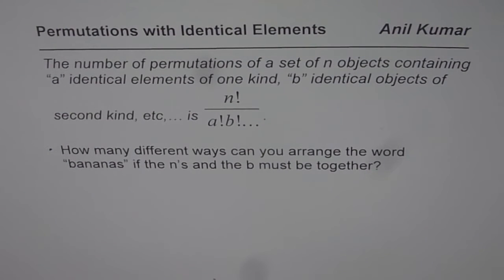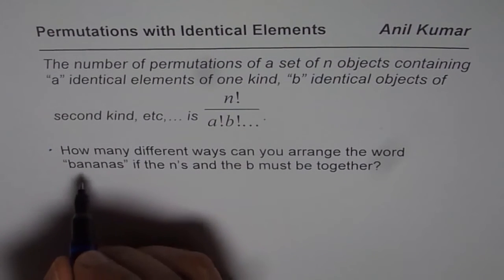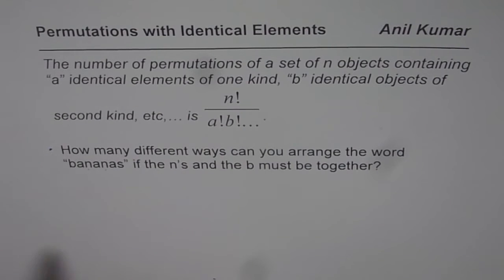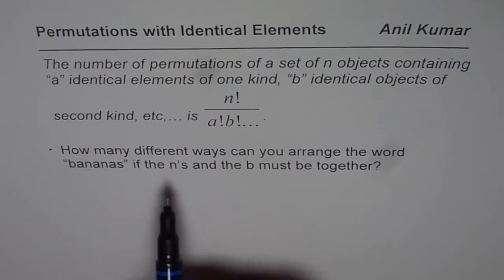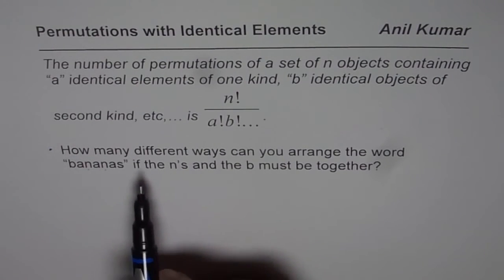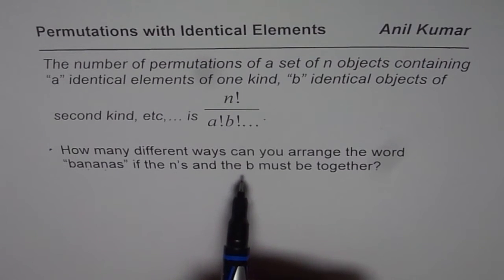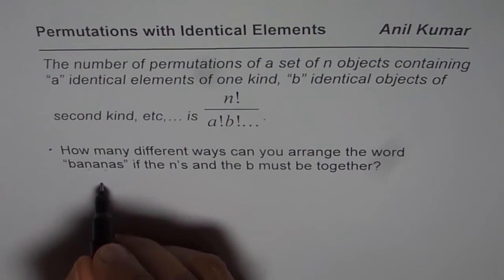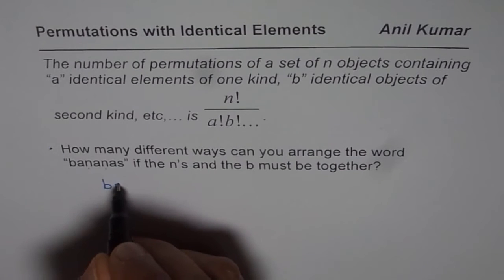Here is my solution. Now, what we notice is that we have two n's and one b. When we say we need to keep n's and b together, let me make one group which has got b and n together. So this is my one group.